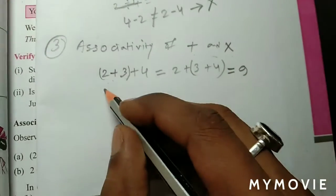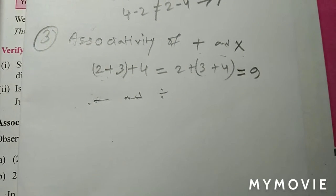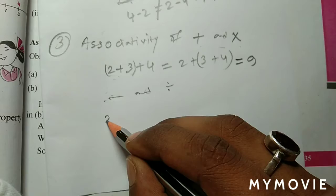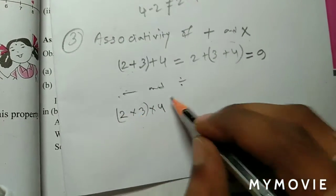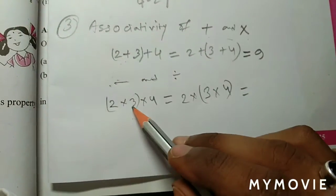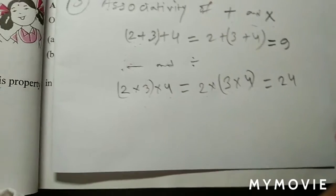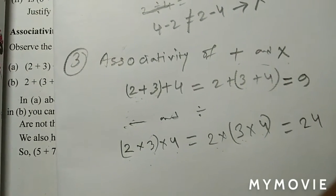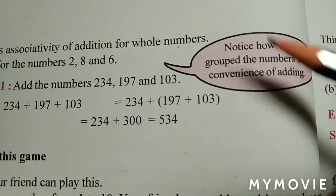Multiplication की time में भी associative property देखेंगे — 2 into 3 into 4: first दोनों को group में लो: (2×3)×4 = 6×4 = 24. Last दोनों को group में लो: 2×(3×4) = 2×12 = 24. देखो same result आया। So we can say that addition and multiplication are associative for whole numbers.